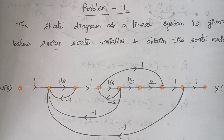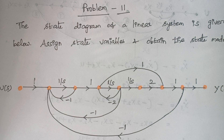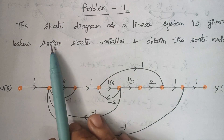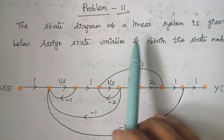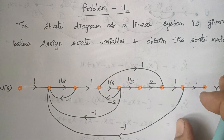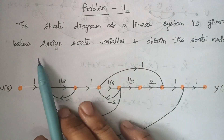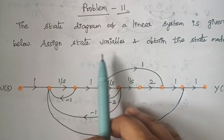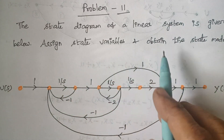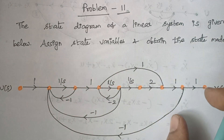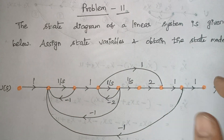Hello viewers, I am Kausalya. Today we are going to solve problem number 11. The problem is: the state diagram of a linear system is given below. Assign state variables and obtain the state model.